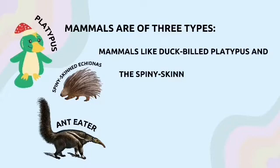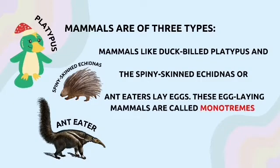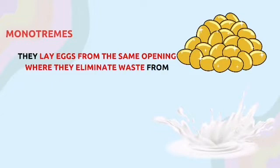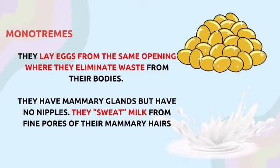Mammals like duck-billed platypus and spiny-skinned echidnas, or ant-eaters, lay eggs. These egg-laying mammals are called monotremes. They lay eggs from the same opening where they eliminate waste from their bodies. They have mammary glands but have no nipples. They sweat milk from fine pores of their mammary hairs on their belly.